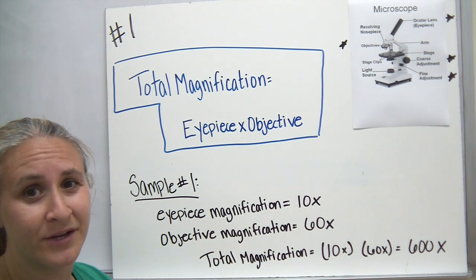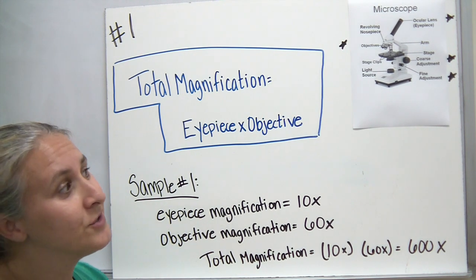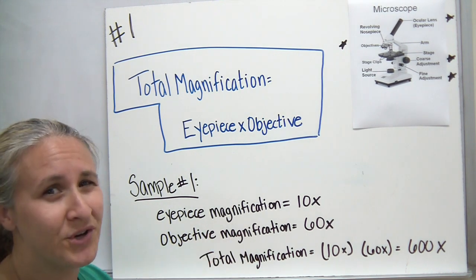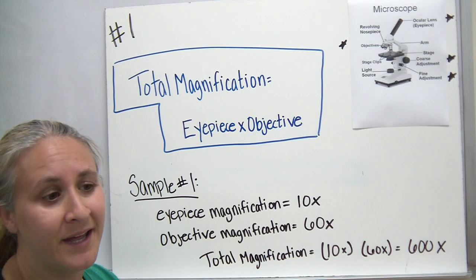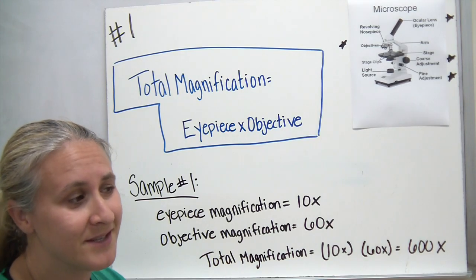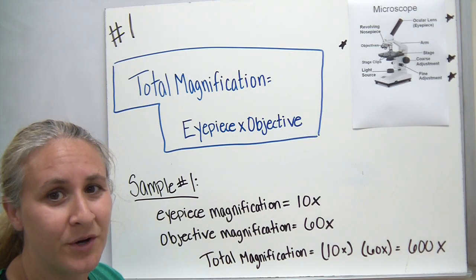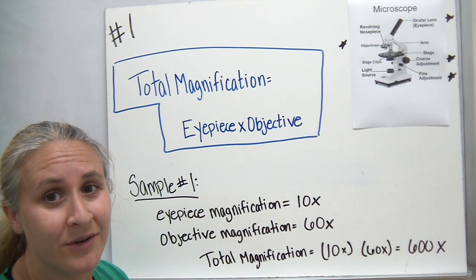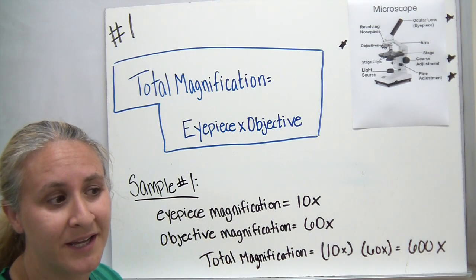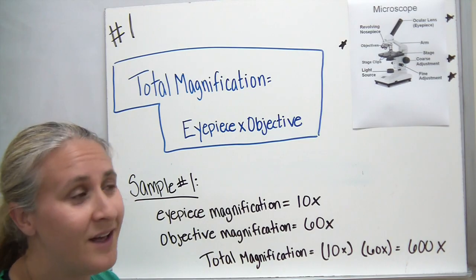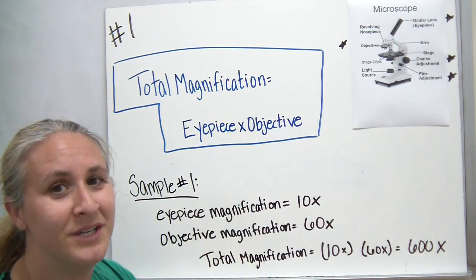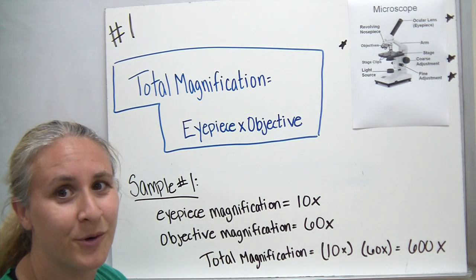Today's video is going to concentrate on microscopes. So far we've been talking a little bit about cells and we realized that cells are quite small. Most cells you can't see with the naked eye. So in order to see our cells, we need to use a microscope.